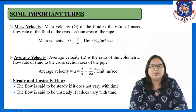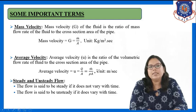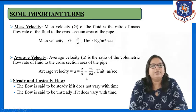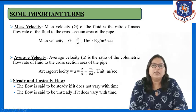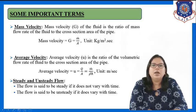I am explaining this because in numerical problems, if mass flow rate and density are given and you have to calculate average velocity, use the equation ṁ upon ρA. And if volumetric flow rate is given and you want to calculate velocity, use the equation u equal to Q by A. The unit of average velocity is meter per second.